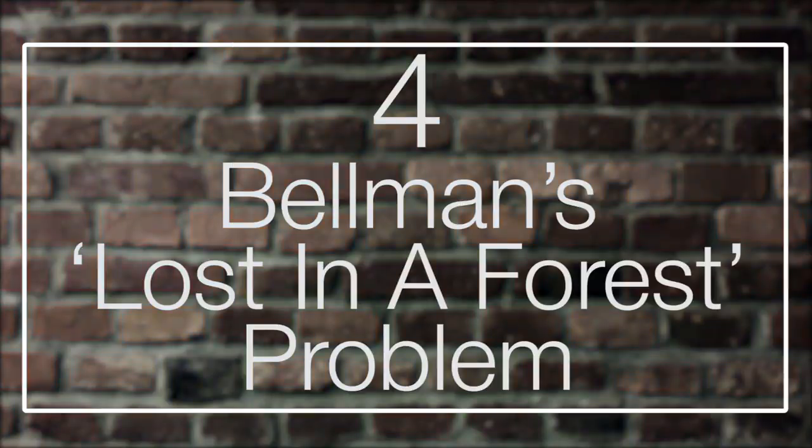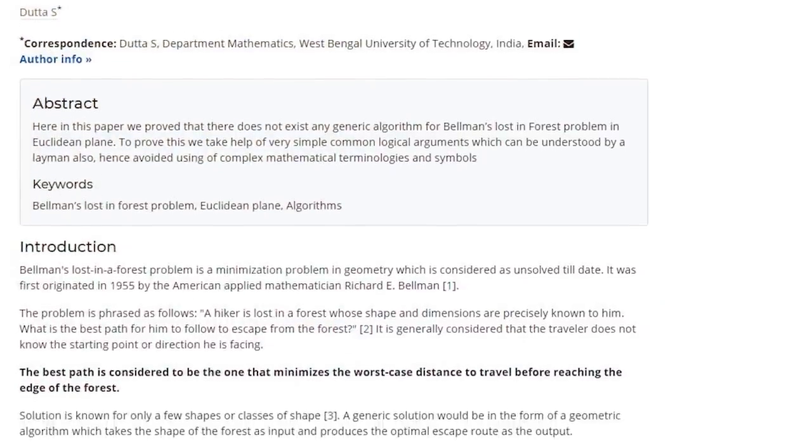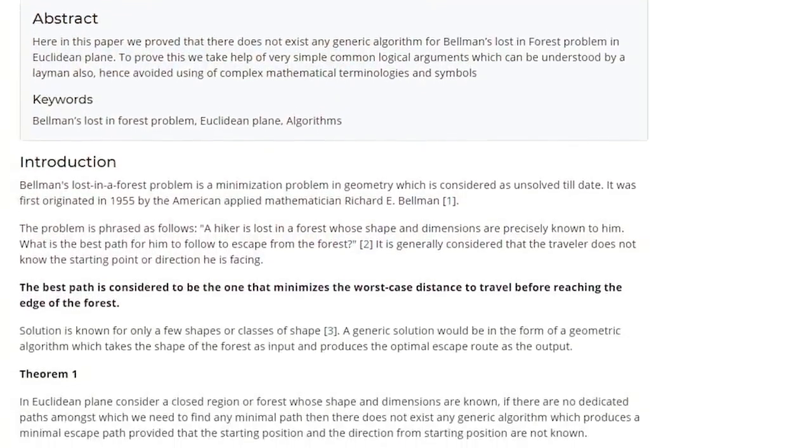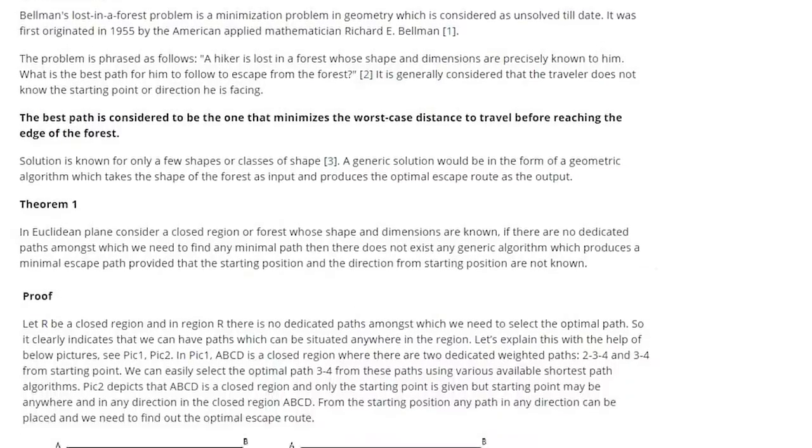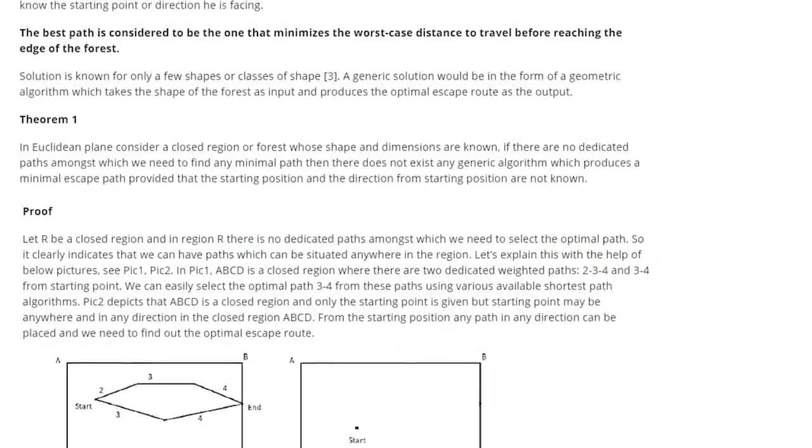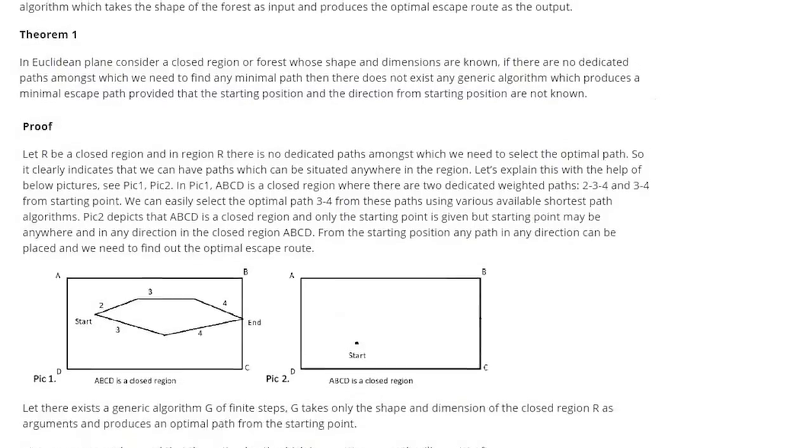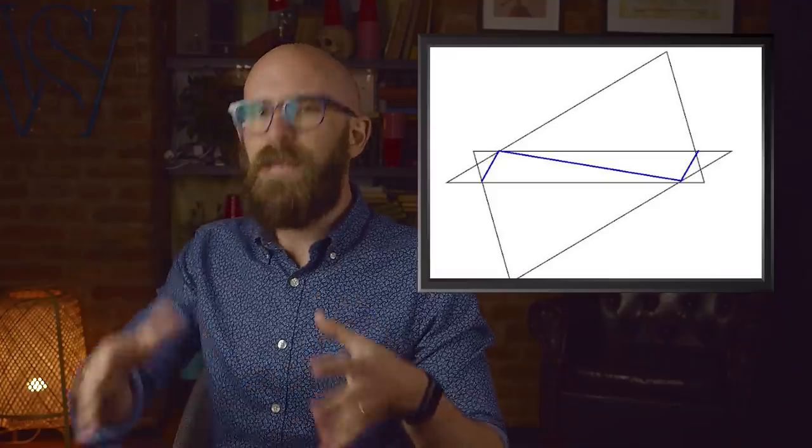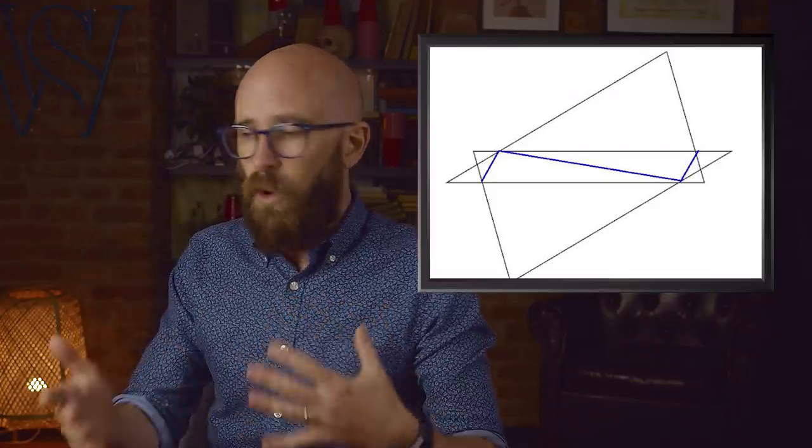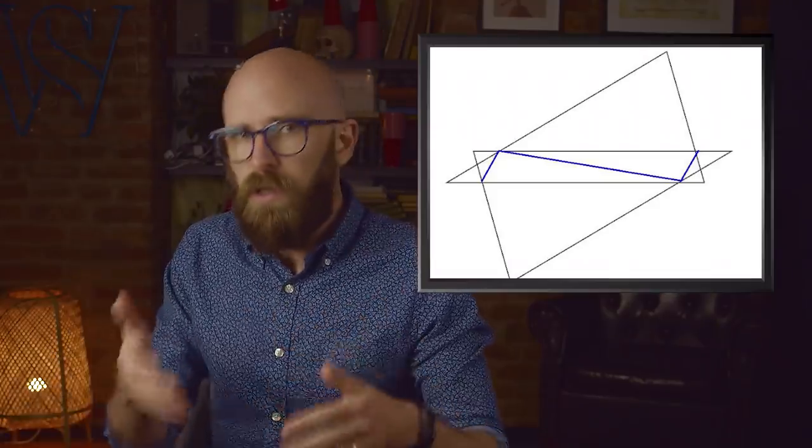Number four: Bellman's Lost in a Forest Problem. This one may sound a bit similar to the Rendezvous Problem, though that's only because both of them are expressed in the form of someone trying to escape a forest. The simply named Bellman's Lost in a Forest Problem is a geometrical problem first postulated in 1955 by a mathematician called Richard E. Bellman. Basically, it aims to find out if there's a way—or more exactly, an algorithm—for a lost hiker to accurately calculate the most optimal path out of a forest of any given area.